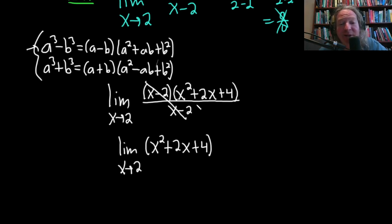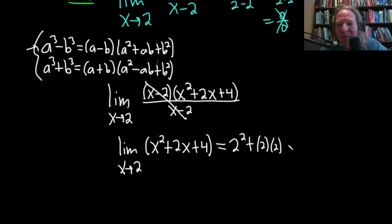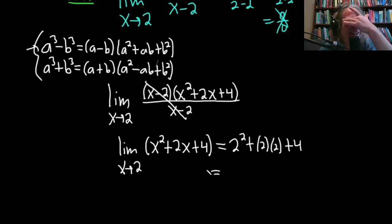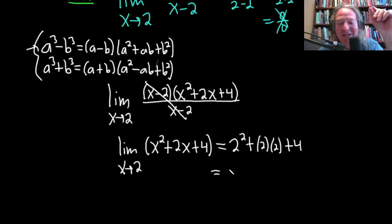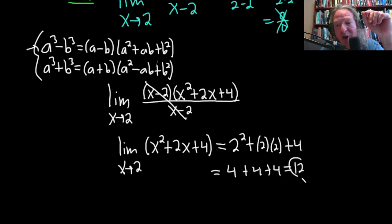We drop the limit sign and plug in 2: 2 squared plus 2 times 2 plus 4, which is 4 plus 4 plus 4, so we get the answer of 12.